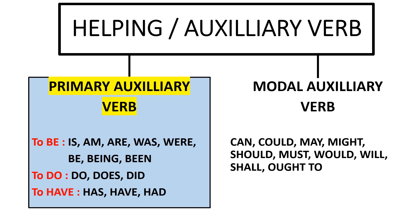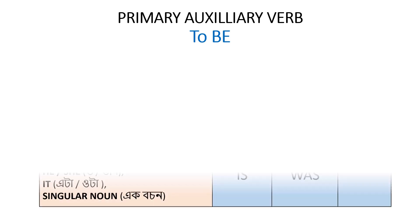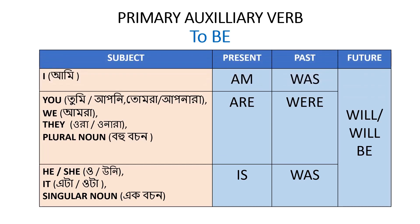Now, primary auxiliary verb — the 'to be' form: which subject takes which form. If the subject is 'I', in present tense we use 'am', in past tense 'was', and in future tense 'will' or 'will be'.